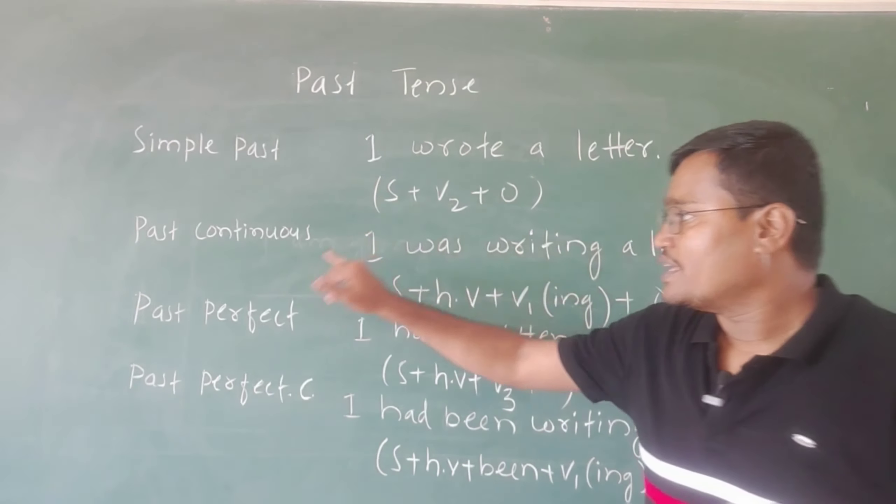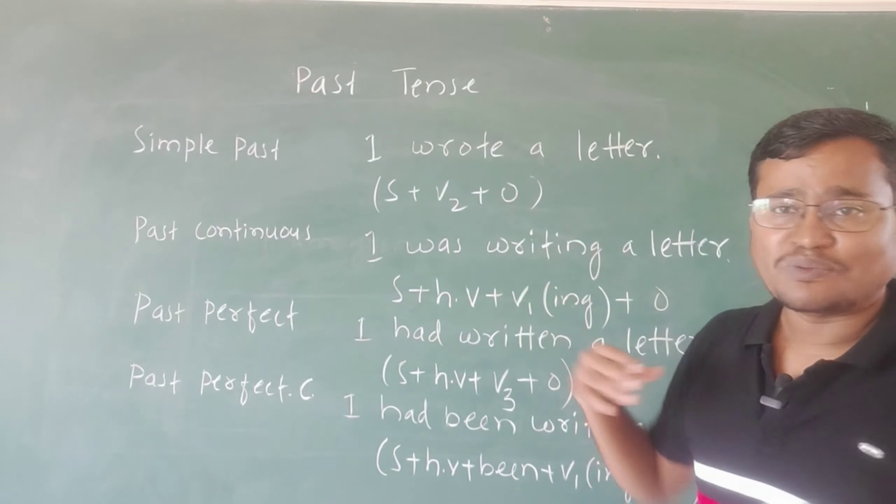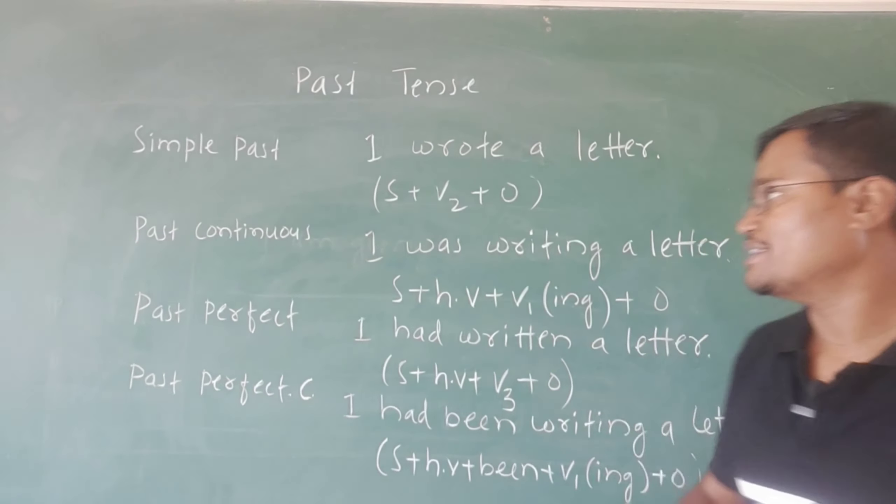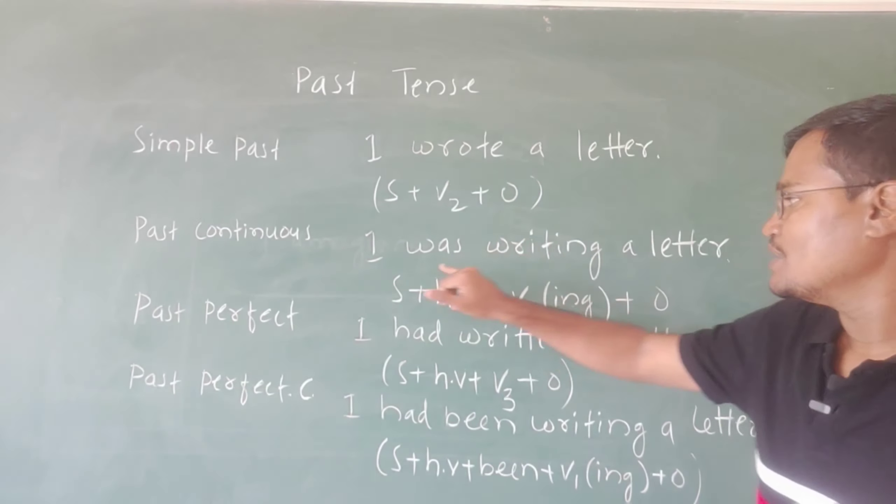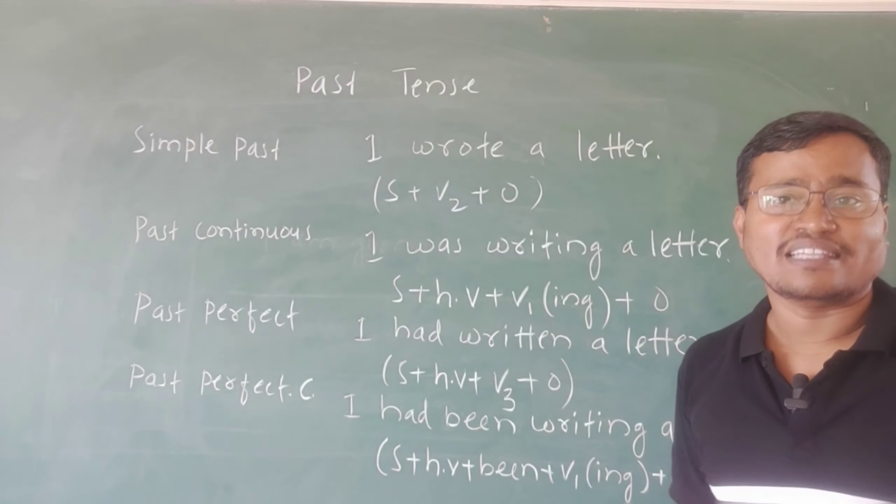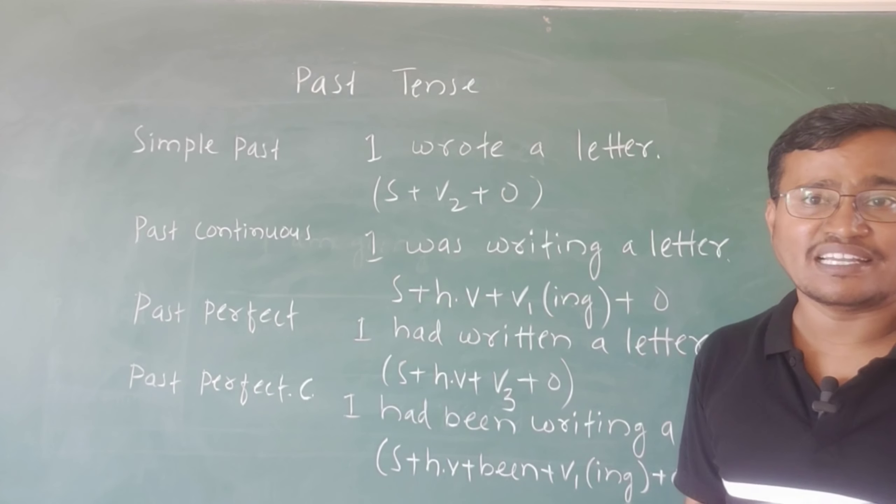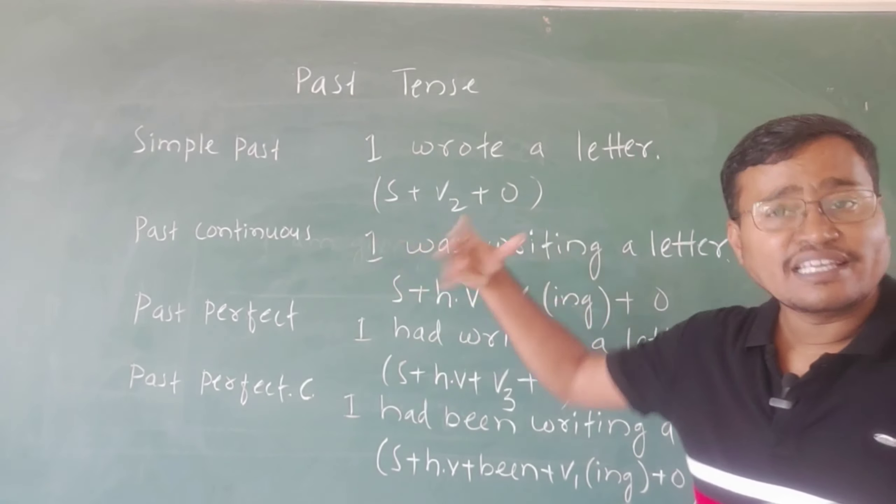For past continuous tense, 'I wrote a letter' becomes 'I was writing a letter', 'She was writing a letter', and 'They were writing a letter'.